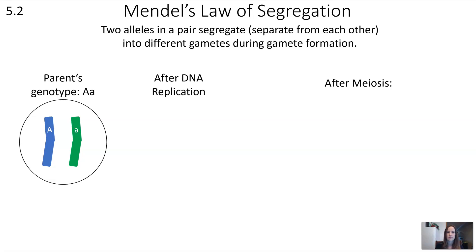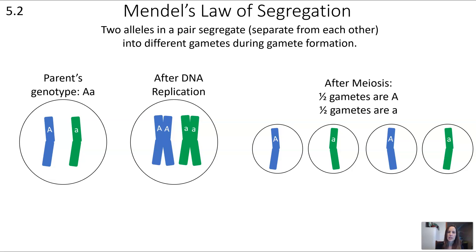After DNA replication we have two chromatids for each chromosome — a complete copying. Then after both steps of meiosis we end up with four gamete cells. Notice that half of the gametes end up with big A and half with little a. This is what Mendel's law of segregation is all about: those two alleles, big A and little a, end up in separate gametes during gamete formation.